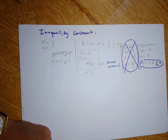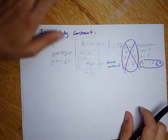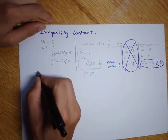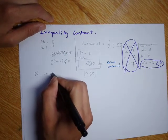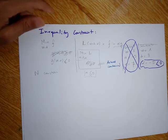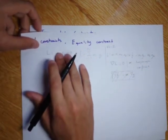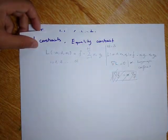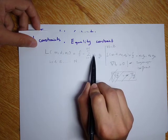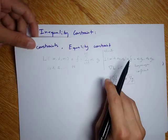Now let's generalize to n constraints. So far we've been dealing with just one constraint. For n inequality constraints, it's the same equation as for equality constraints. The key difference is that you need to take into account the constraints for each alpha_i, and then everything is good.